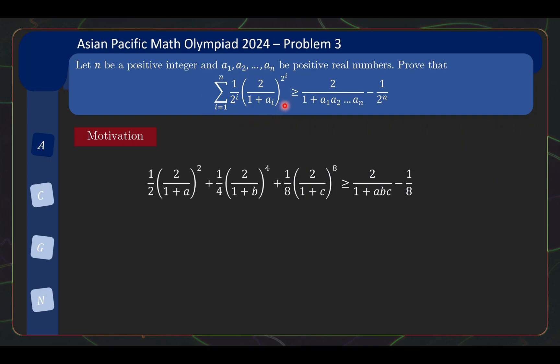So the left hand side, the summation basically has a half term, a quarter term, and an eighth term. And the brackets are basically 2 over 1 plus something. So you have 2/(1+a), 2/(1+b), 2/(1+c). And the powers are also increasing powers of 2. As for the right hand side, you also have 2 over 1 plus something, but the something is the product of the terms. And then you have minus 1/2ⁿ. Right off the bat, this looks a bit unconventional, especially the minus sign here. It looks quite strange to have a minus sign in inequality problems.